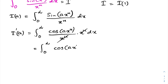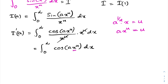Now I'm going to use the substitution a^(1/n) · x = u, so that ax^n = u^n. Differentiating gives a^(1/n) dx = du.